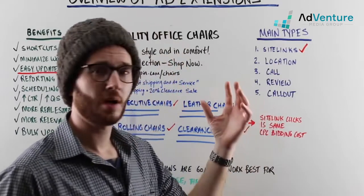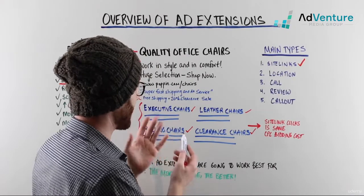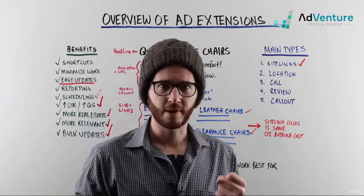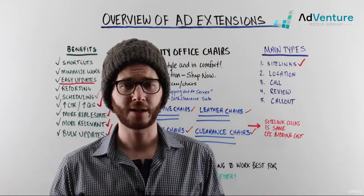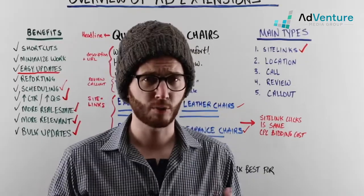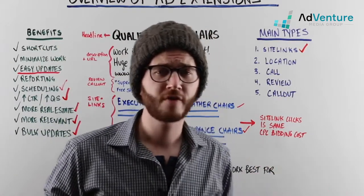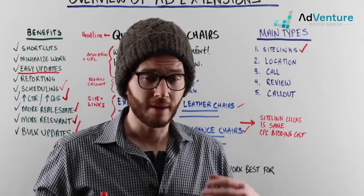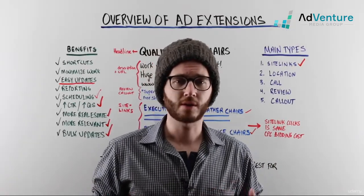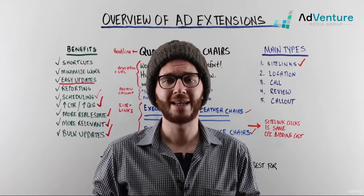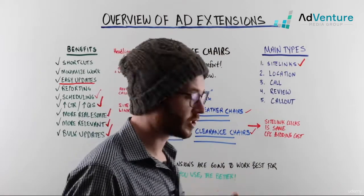The same concepts apply when writing sitelink extensions as when writing your ad headline and ad text. You want to be very clear and qualify the sitelink extensions. If you're concerned about getting a bad click, you want to describe the emotional payoffs — the benefits — of the products, services, or information you're highlighting. And if you have room, you also want to add some of the features and benefits of what you're highlighting in those extensions.